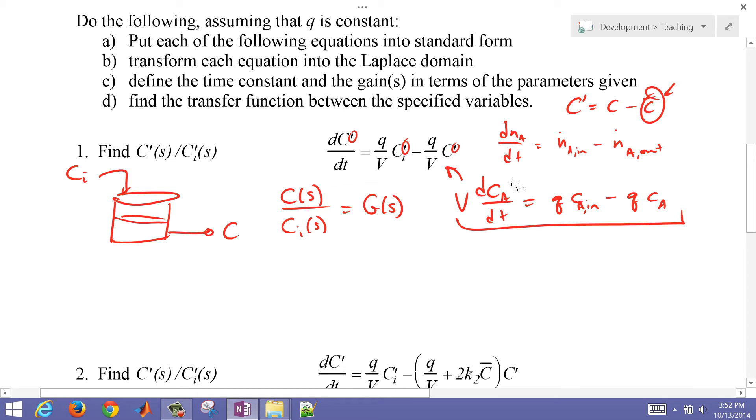So I want to put this into the transfer function form, and so what I do is just use my Laplace transforms. So that's going to be V times C of S minus concentration at time zero. Because I'm in deviation variable form, that equals zero, because I've selected the nominal conditions to be starting at zero. So now equals Q over V times C of S minus Q over V C of S.